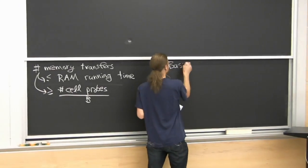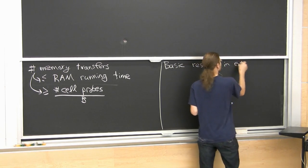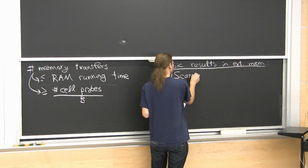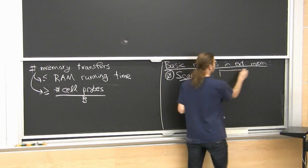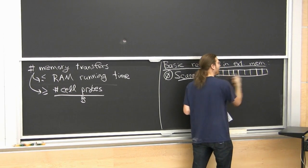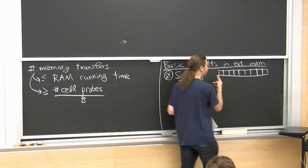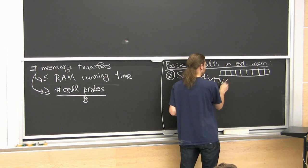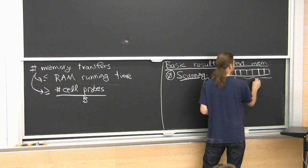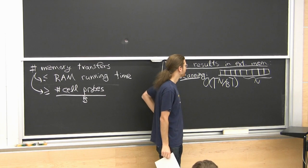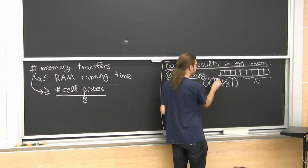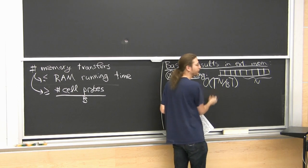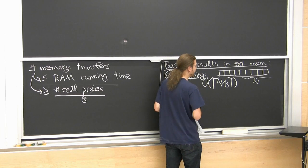Let me give some basic results in this model. Result 0 is scanning. If you have an array of n items and want to do a linear scan — add them all up or search for something — anything involving accessing them in order costs ceiling of n/B block accesses. That's how many blocks are in the array, which is optimal.